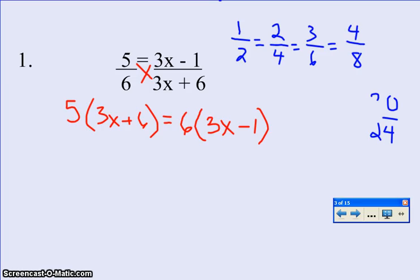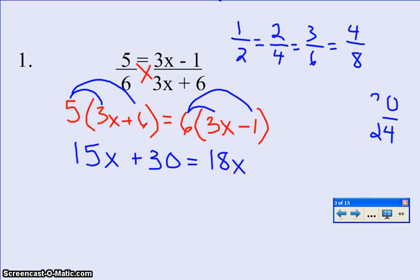So now when we solve this, we will do the distributive property twice, once on the left side, once on the right. So 5 times 3x is 15x. 5 times a positive 6 is plus 30. Then on the right-hand side, 6 times 3x is 18x, and 6 times a negative 1 is a negative 6.